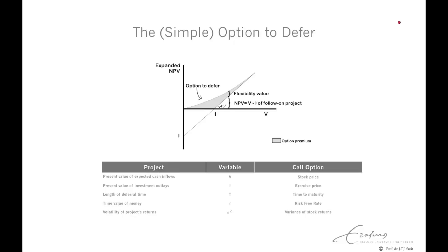On the vertical axis, you have the value of the option, or expanded net present value. And on the horizontal axis, you have the value of the underlying assets — so the value of the oil reserves.